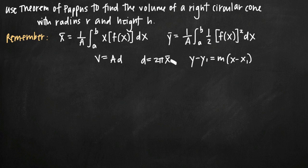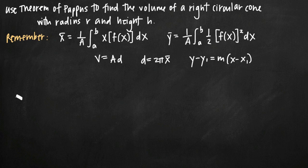If we need the x-coordinate of the centroid of the plane region, we need a formula for that. We also have the y-coordinate of the centroid in case we need it. To find this formula we need area, which we'll get later, and a formula for f(x). We don't have f(x) right now, so we're going to use the point-slope form of the equation of the line to find it — we'll be working backwards a little bit.